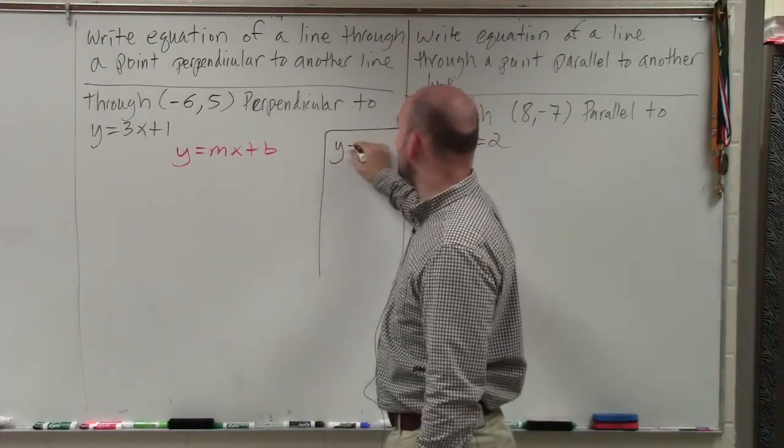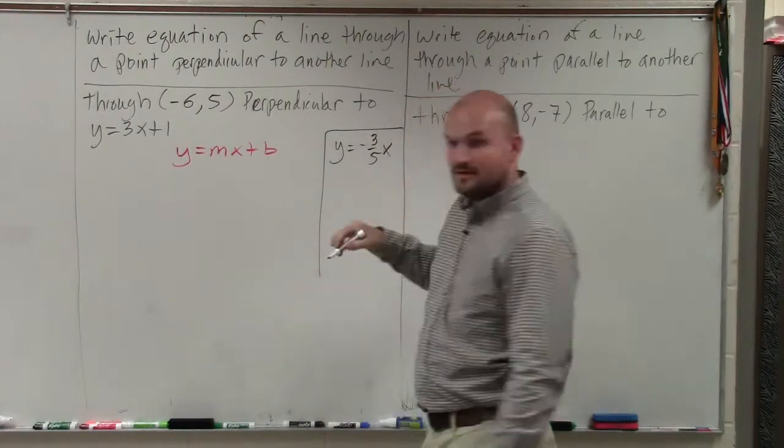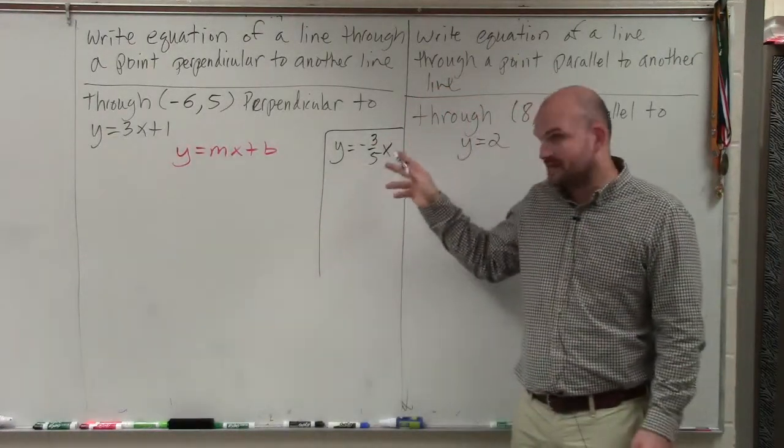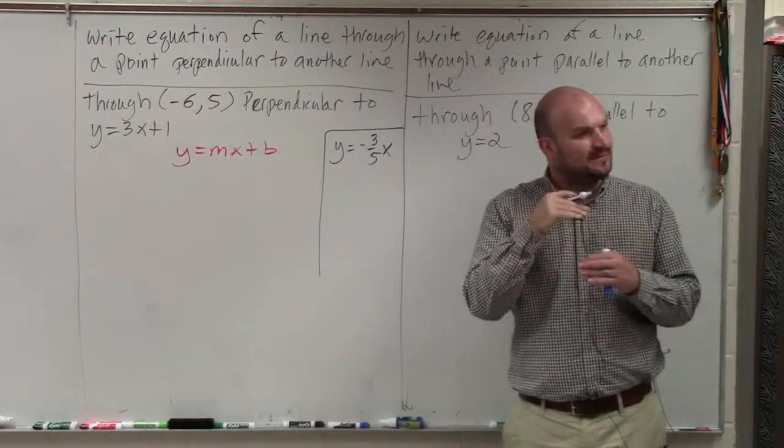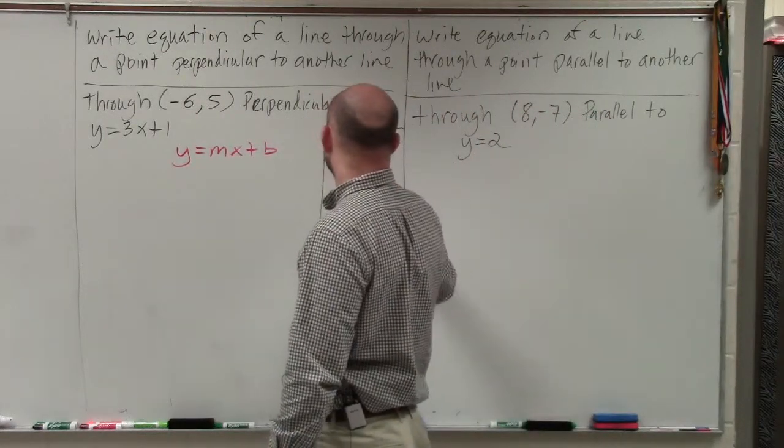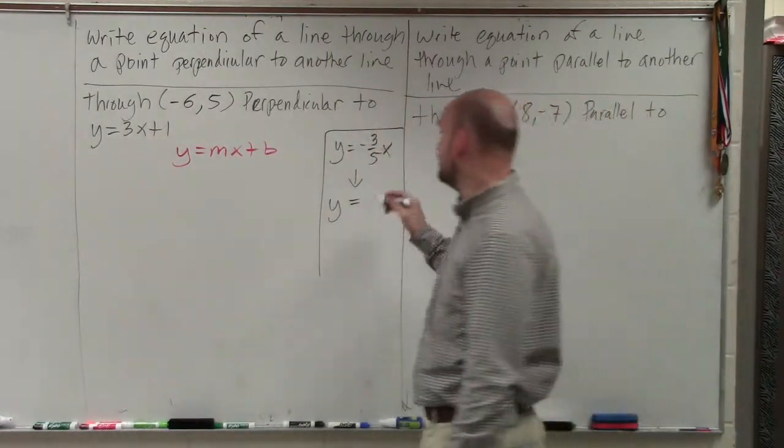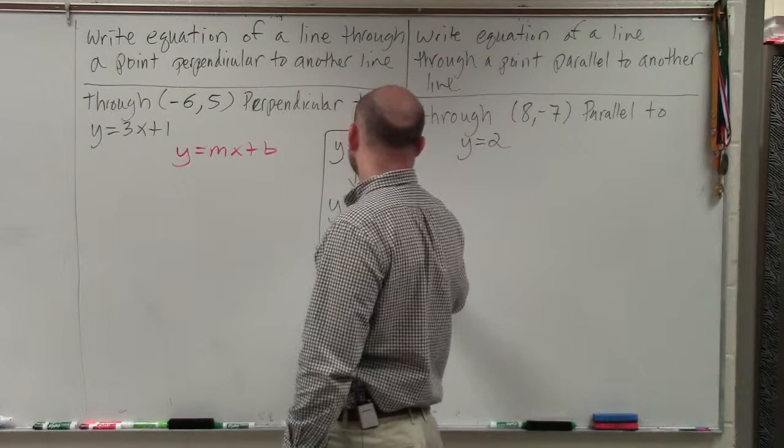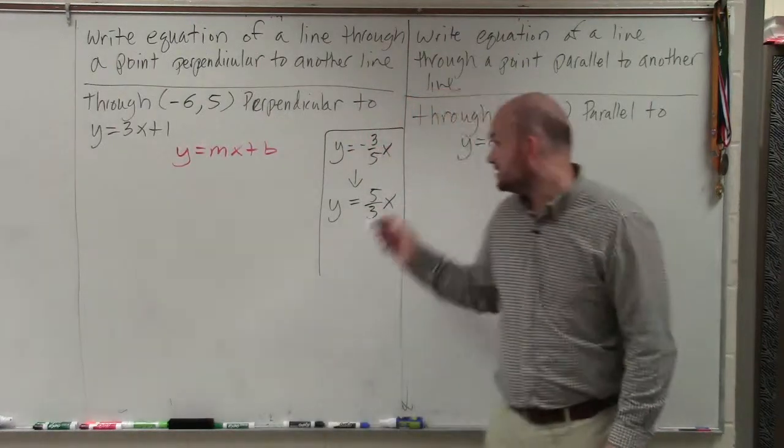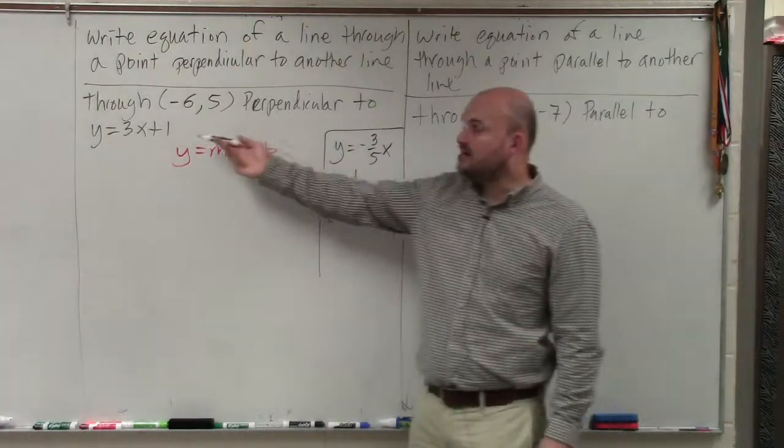if I had a slope of y equals negative 3 fifths x, a line perpendicular to that is going to have what we call opposite reciprocals. So the perpendicular line would have a slope that is the opposite - if one's negative, the other one is positive - and it's the reciprocal. Do you see how these are opposite reciprocals of each other? So in our example,